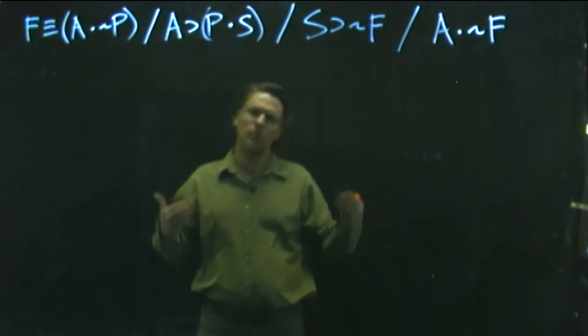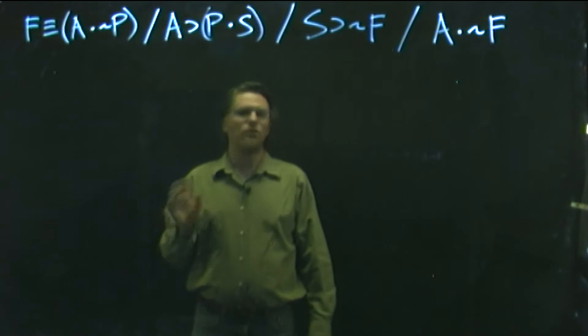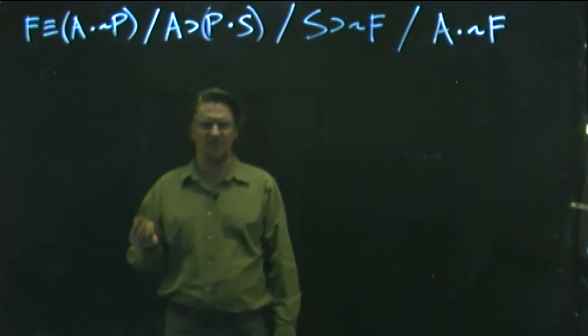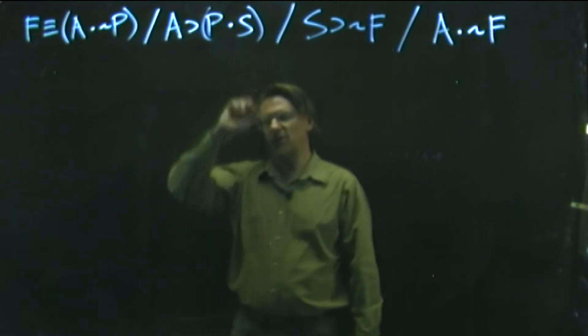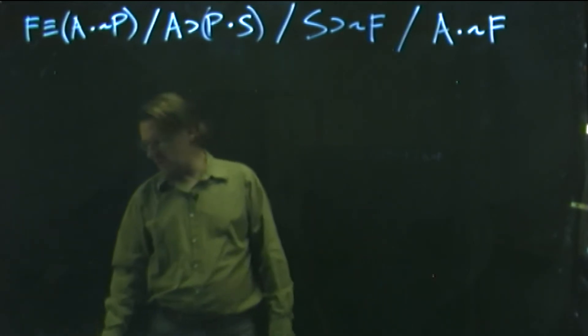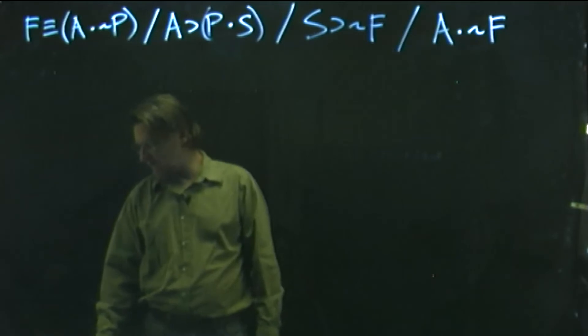All right, so here is where we're going to learn how to use indirect truth tables to determine if a set of claims is consistent or inconsistent. And so what we're looking at here on the screen is actually from exercise set 3 from 5.5, specifically problem number 2.